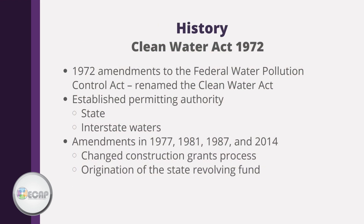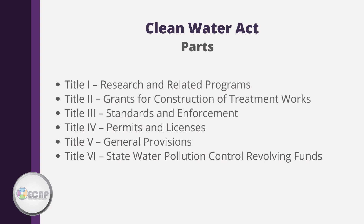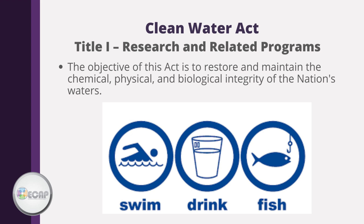The 1972 amendments to the Federal Water Pollution Control Act, which was renamed the Clean Water Act, established permitting authority over state as well as interstate waters. Revisions in 1981 and 1987 were mostly about changes to the construction grant process and the origination of the state revolving fund. The Clean Water Act is broadly divided into six titles. The objective is to restore and maintain the chemical, physical, and biological integrity of the nation's waters — put simply, to make the waters swimmable, fishable, and drinkable.